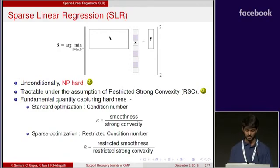Similarly for sparse optimization, there is a restricted notion of condition number denoted by kappa tilde, which is defined as a ratio of restricted smoothness and restricted strong convexity of the objective function.